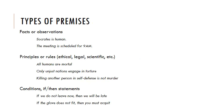Let's think about types of premises — what can we use to make an argument? What kind of evidence or support can we use to prove our conclusion? The simplest type of premises are just basic facts or observations, things that are factually, objectively true. Socrates is human — that's a genetic fact. The meeting is scheduled for 9 a.m. — that's something that's been scheduled, it's a fact. These are the most basic types of premises.